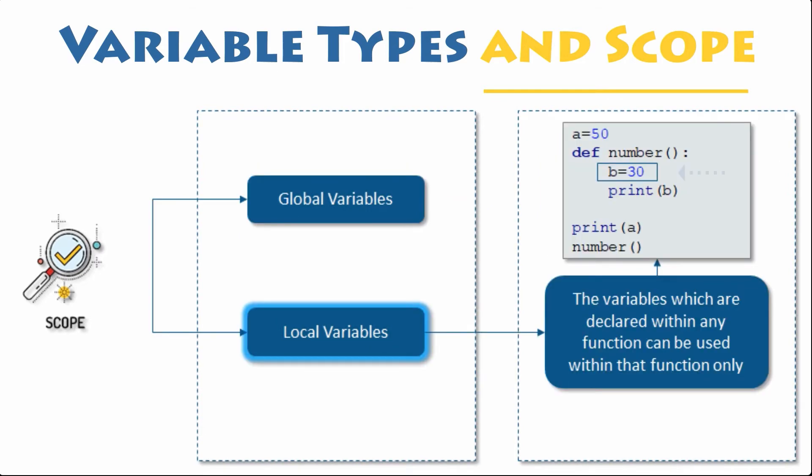On the other hand, a variable which is defined inside a function is local to that function. It is accessible from the point at which it was defined until the end of the function, and it exists for as long as the function is executing. For instance, the parameter names in the function definition behave like local variables, but they contain the values that we pass into the function when we call it.